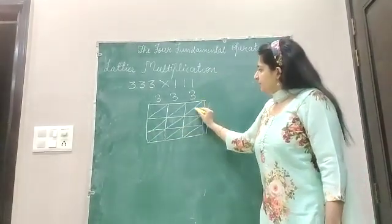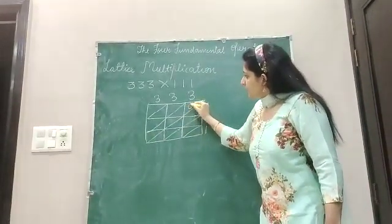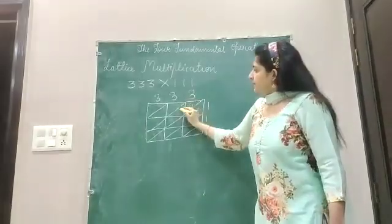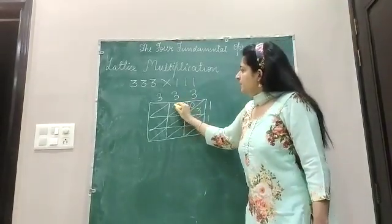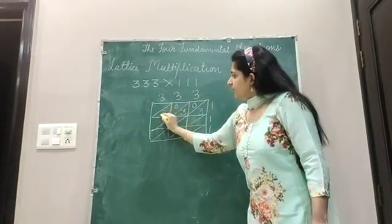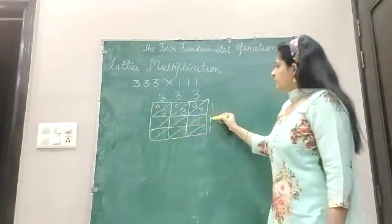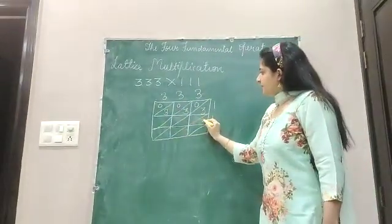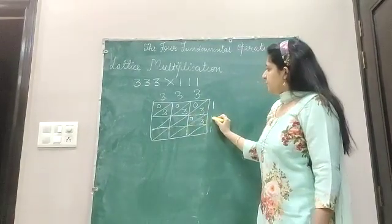1 multiplied by 3 is 3, and here 0. 1 multiplied by 3 is 3, and here 0. 1 multiplied by 3, and here 0. Again, 1 multiplied by 3 is 3, and here 0.